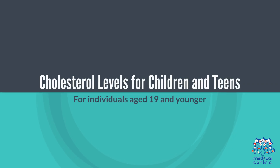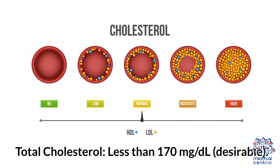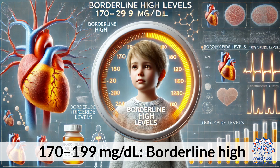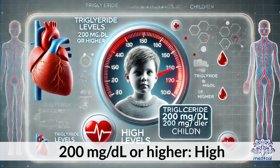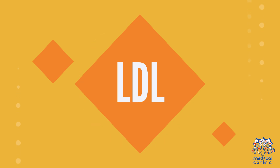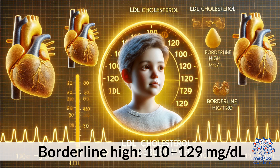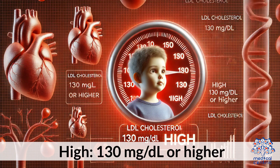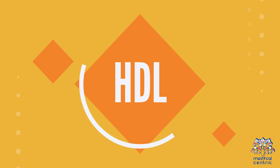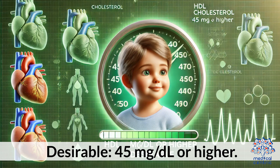Cholesterol levels for children and teens: For individuals aged 19 or younger, total cholesterol less than 170 mg/dL is desirable, 170 to 199 mg/dL is borderline high, and 200 mg/dL or higher is high. LDL: optimal is less than 110 mg/dL, borderline is 110 to 129 mg/dL, and high is 130 mg/dL or higher. HDL: desirable is 45 mg/dL or higher.